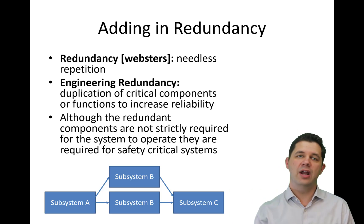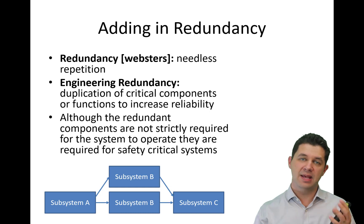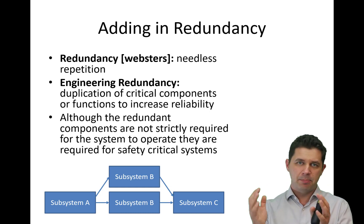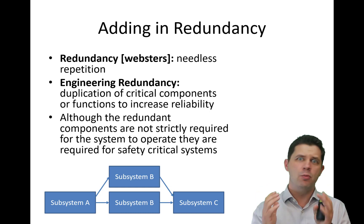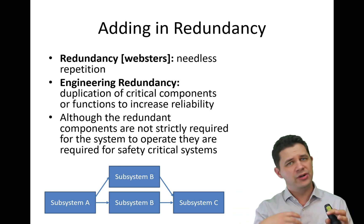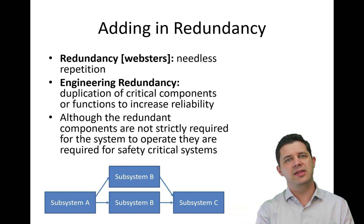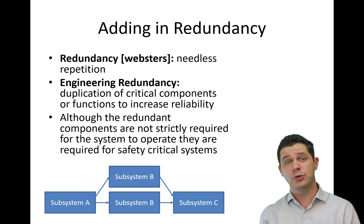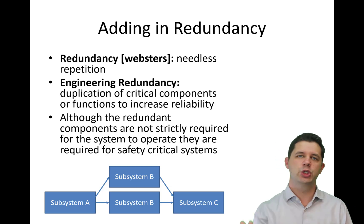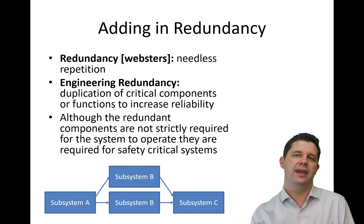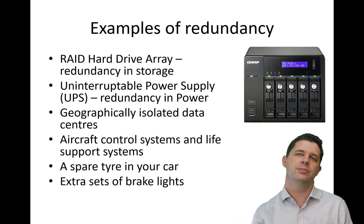If you look at the diagram here, you might have subsystems A, B, and C, and subsystem B might be more prone to failure than the others. So, you might have two of them — a redundant system. If one of subsystem B fails, the other one just switches over and keeps on working, keeping the system going.